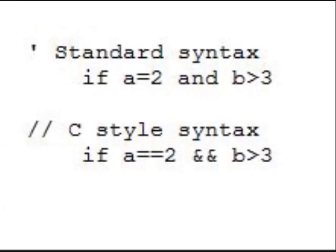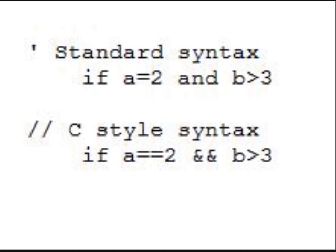RobotBasic even allows you to use the basic syntax or even a C syntax for many statements. Even the graphic statements in RobotBasic are designed to grow with the student. Here we see how to use normal line statements to draw a triangle, then the draw shape, and then we demonstrate that the draw shape is much more powerful — it can even draw something like a simple tank or even something more complicated. If you run this program, you get these shapes.